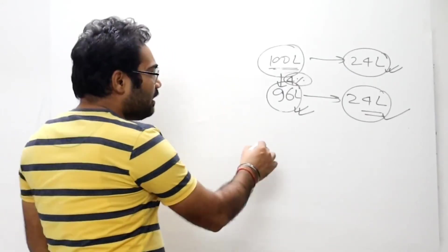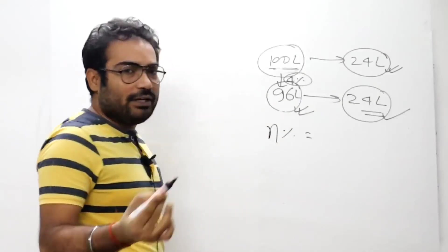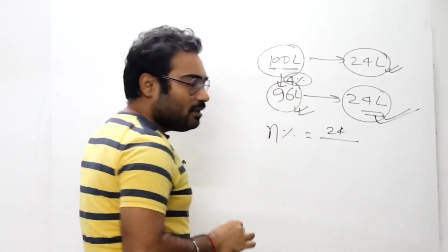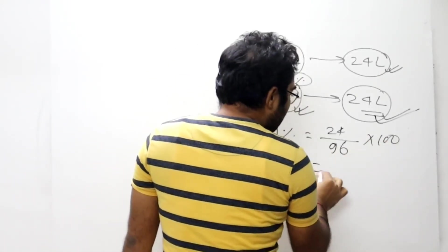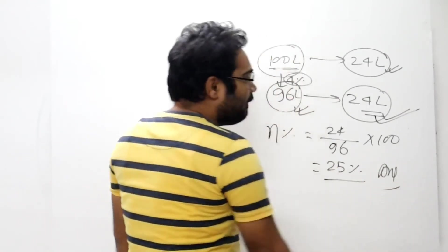So here you can calculate the percentage efficiency. After the gasket is fixed, the efficiency is 24 liters divided by 96 liters times 100, which equals 25 percent. This is the final answer.